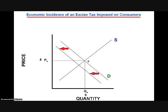Economists depict the imposition of the tax on the demand side of the market by a shift of the demand curve downward. The difference between the original demand curve and the new demand curve indicating the tax is the same all along the length of the curve. In other words, since this is an excise tax imposed on each unit of the item, the amount of the tax reduces demand at all points along the demand curve.